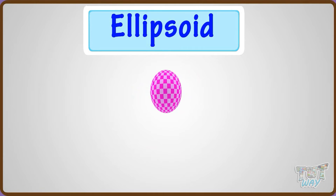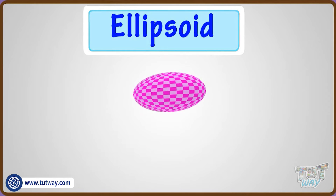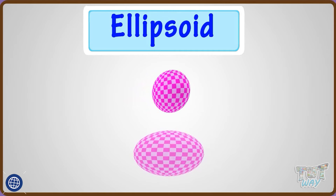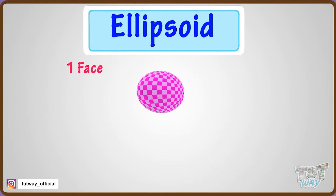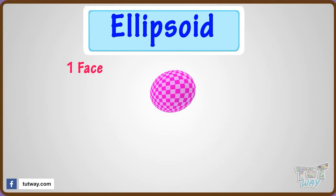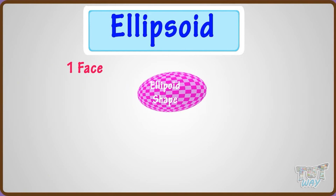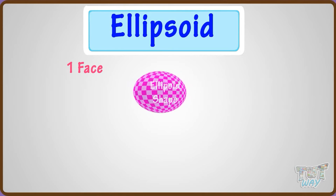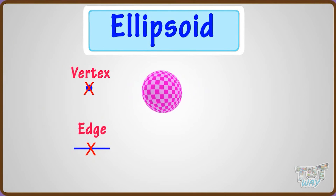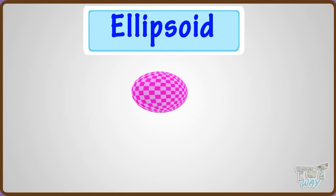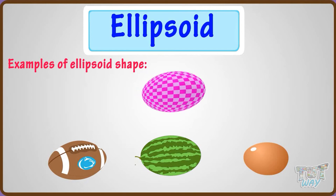An ellipsoid is a 3D shape resembling a flattened sphere. It has only one face, which is its surface, which is ellipsoid in shape. And it has no vertex and edge. These are a few objects which are ellipsoid in shape.